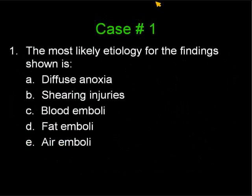The first question: what is the most likely etiology for the findings shown? A, diffuse anoxia; B, shearing injuries; C, blood emboli; D, fat emboli; and E, air emboli.